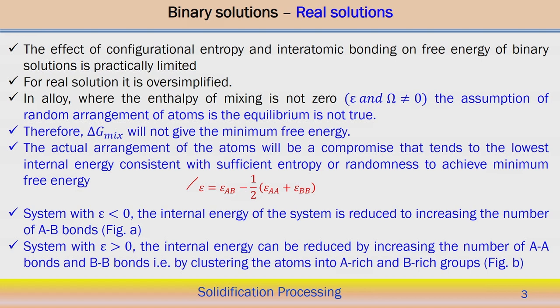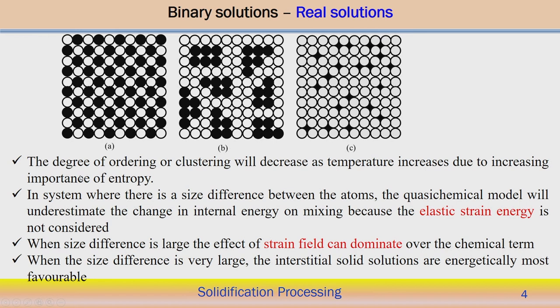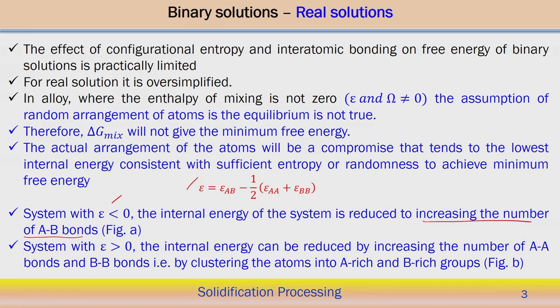Now if epsilon is less than 0, the internal energy of the system is reduced by increasing the number of AB bonds. This is one case. But when epsilon is greater than 0, that means the effective bonding energy is greater than 0. In this case, the internal energy can be reduced by increasing the number of AA bonds and BB bonds. So that is possible by clustering of atoms into A-rich and B-rich regions — two different groups — as we can see from the figure. Figure A shows epsilon less than 0: by increasing the number of AB bonds, the internal energy of the system is actually reduced.